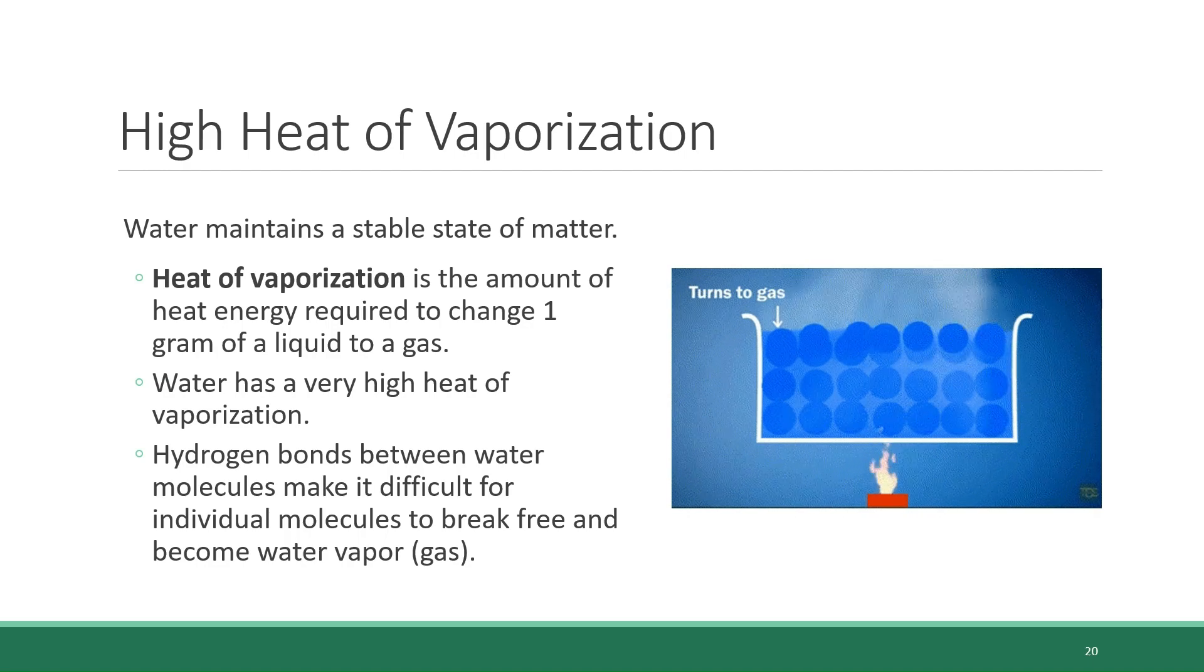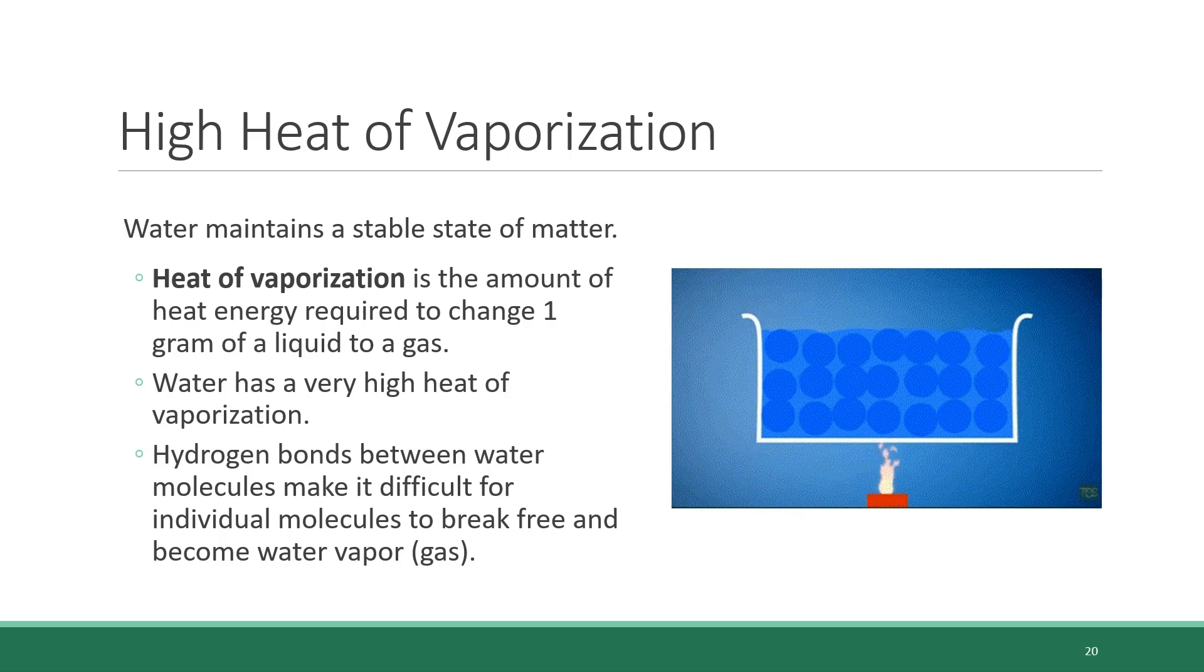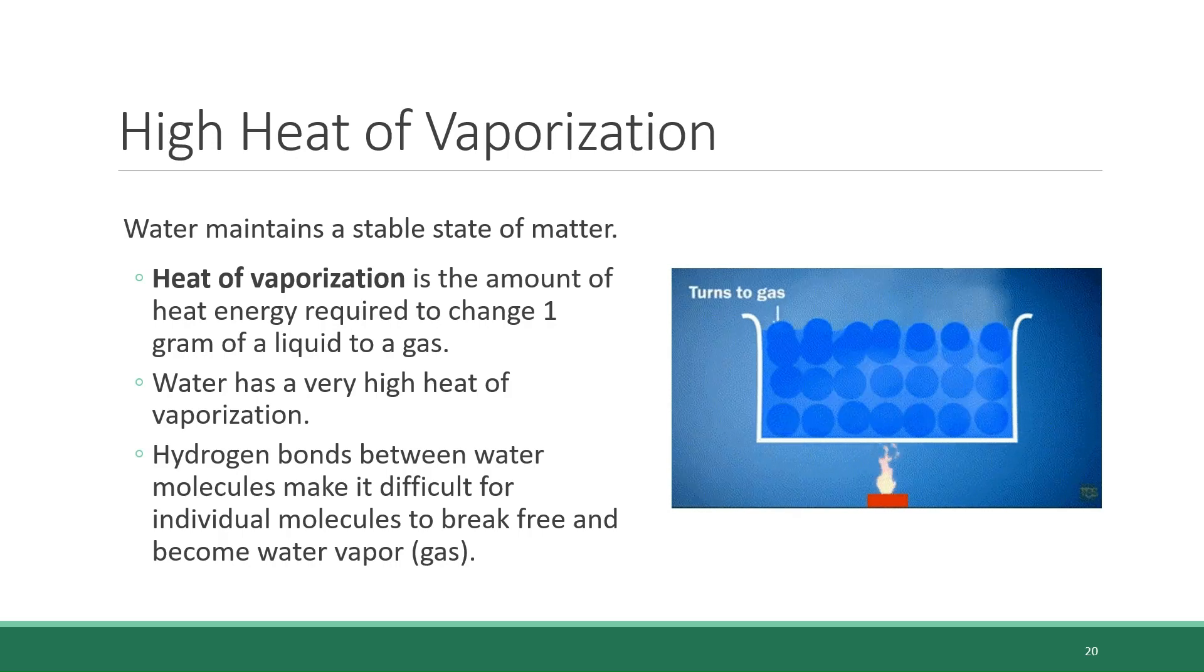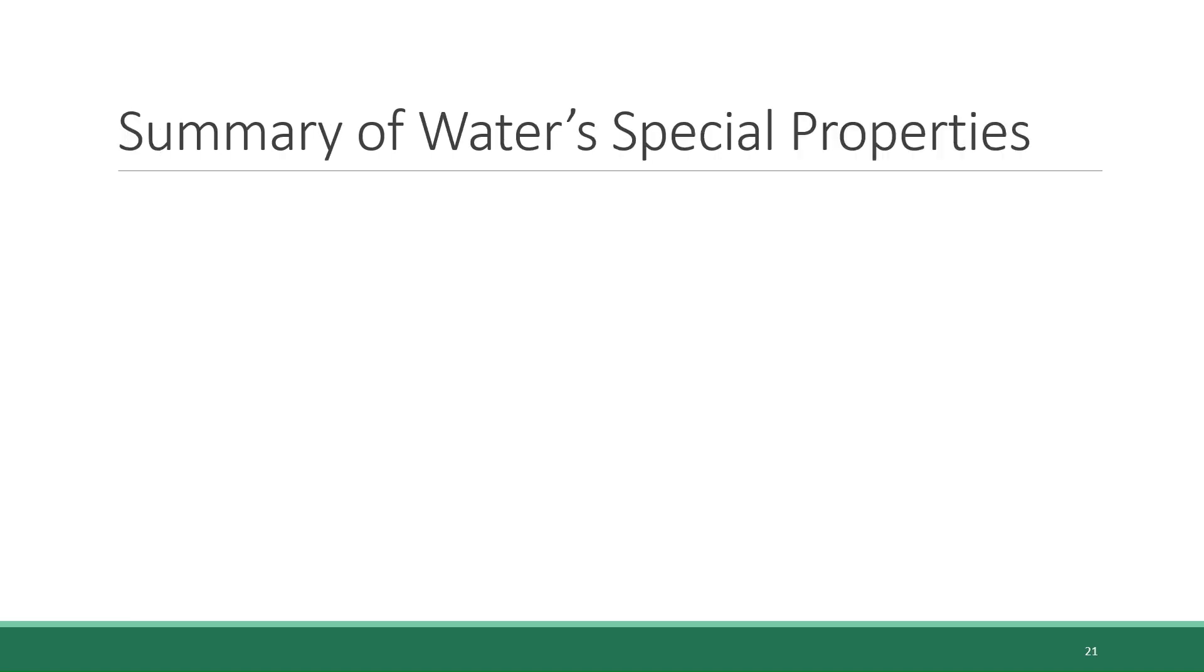On that same note, entire bodies of water like lakes would be at risk of evaporating when it gets hot. So water's stable state of matter prevents this from happening. So that's a lot of highly detailed information about the chemistry of water. So before we close out, let's summarize what we've just learned in this section.